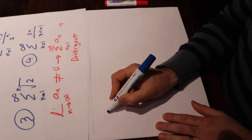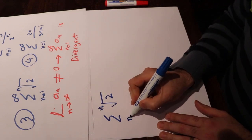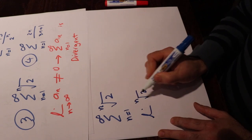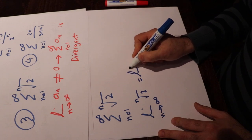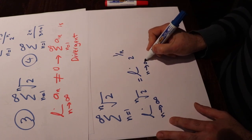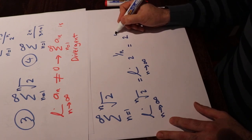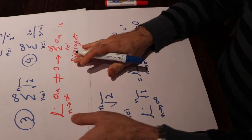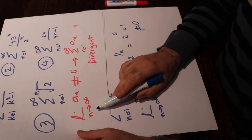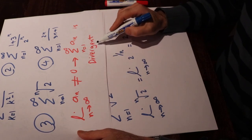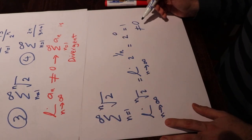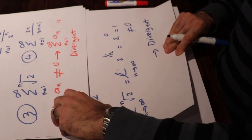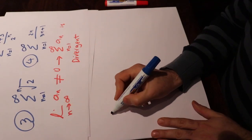Since 3/2 is greater than 1, (3/2)ⁿ tends to infinity as n goes to infinity, which means the limit does not exist. According to the divergence test, if the limit of aₙ is not equal to 0 or does not exist, we can conclude the series is divergent. For the third example, sigma of the nth root of 2 from 1 to infinity, we calculate the limit of 2^(1/n) as n goes to infinity. This equals 2⁰, since 1/n → 0, and 2⁰ = 1, which is not equal to 0. Therefore this series is also divergent.